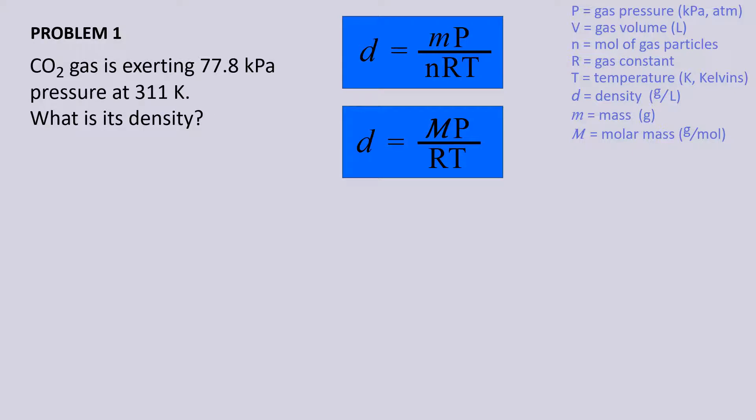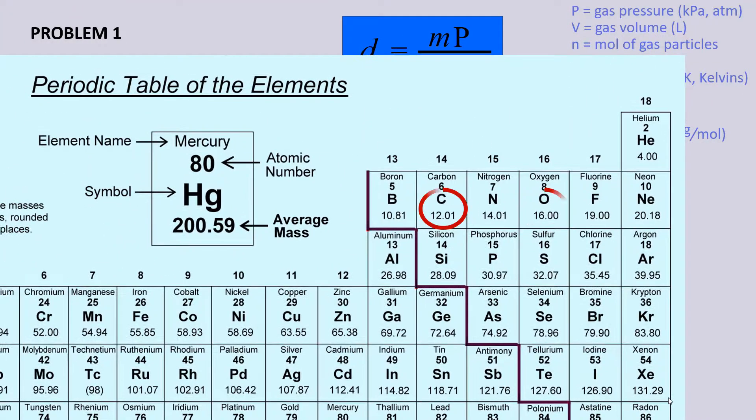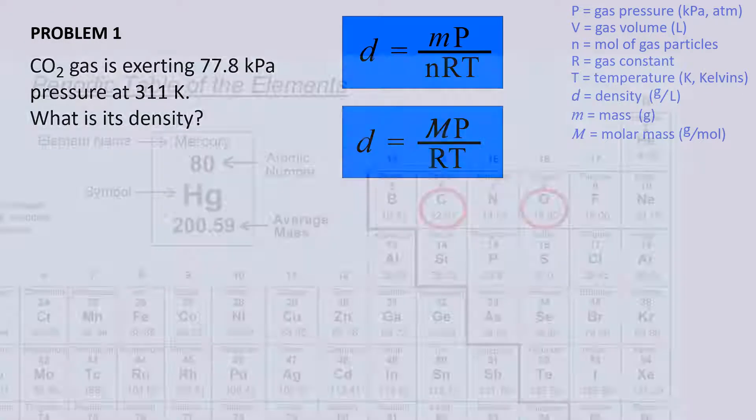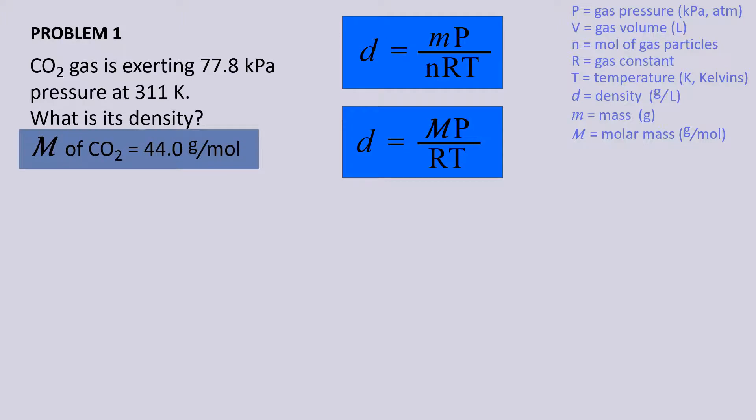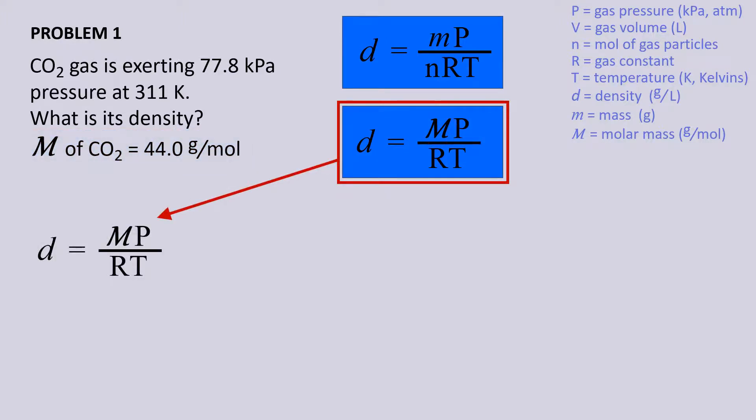Let's do two problems. The first gives us pressure and temperature, but neither mass nor molar mass. However, we do have the identity of the gas, carbon dioxide, and so from the periodic table, we find the molar mass to be 44 grams per mole. Since we now have molar mass, we can see the second equation would be appropriate.